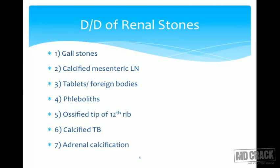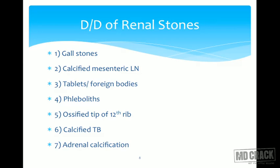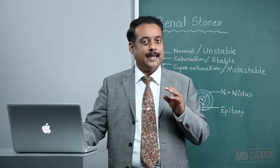Second, calcific mesenteric lymph nodes will show shadows in the center of the abdominal plate, not at the level of the kidney or paramedially. Third, retained tablets or foreign bodies ingested by the patient can mimic stones. Phleboliths can also mimic renal stones. An ossified tip of the 12th rib can be seen as a radiopaque shadow and confused with a renal stone - but it will be seen bilaterally. This is an age-related phenomenon, usually above age 50, with ossification of the 10th, 11th, or 12th ribs. A calcified TB lymph node and adrenal or suprarenal calcifications can also mimic a renal stone.